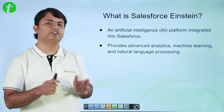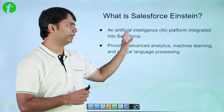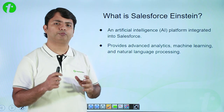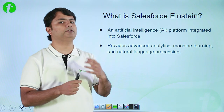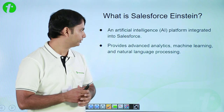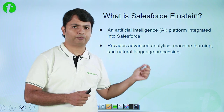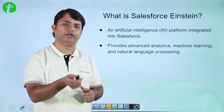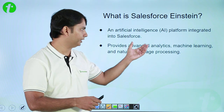Salesforce Einstein is an artificial intelligence tool built into Salesforce. We will perform machine learning where we feed a lot of data to the system, on the basis of which you can perform analytics, forecasting, and other business solutions. It provides advanced analytics, machine learning, and natural language processing — all key features of any AI tool, and Einstein implements all these advanced business intelligence capabilities.